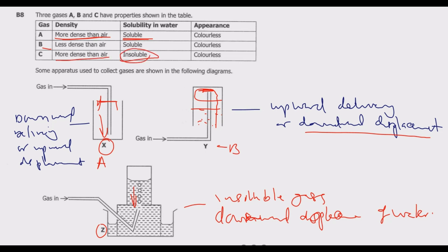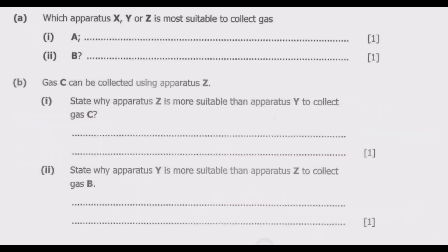Gas C is more dense than air but insoluble in water, so we can use apparatus Z because it is insoluble in water. Of course it will be less dense than water, so it will rise up, and since it cannot form a solution in water it will collect at the top. So the answer combination is: A uses X, B uses Y, and C uses Z.